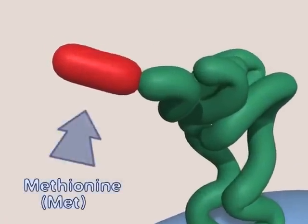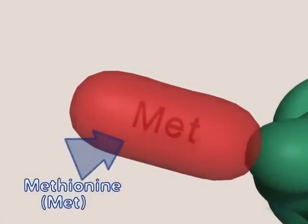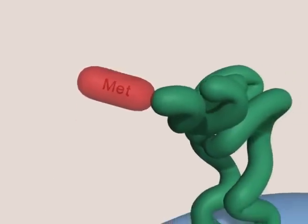Attached to the end of the tRNA is the corresponding amino acid. Methionine corresponds to the AUG codon.